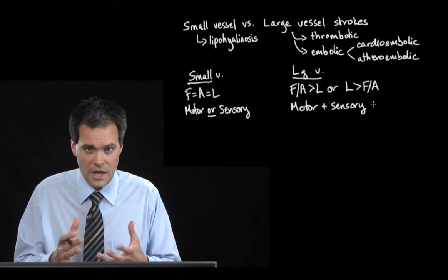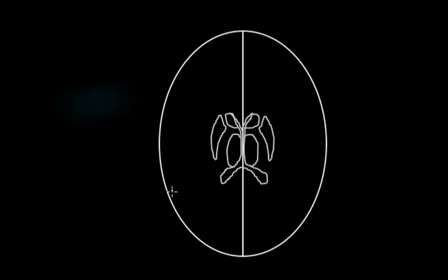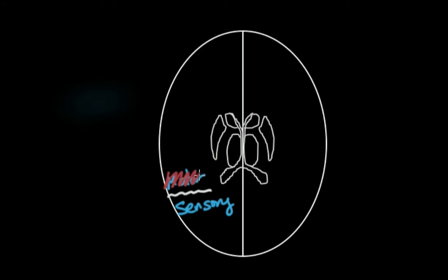Let's go over that in a picture. Your central sulcus has your motor cortex right in front of it and your sensory cortex right behind it. It's very hard for an ischemic stroke to hit just the motor cortex — strokes are usually wedge-shaped and are likely to hit motor and sensory cortex at the same time if they're large vessel.